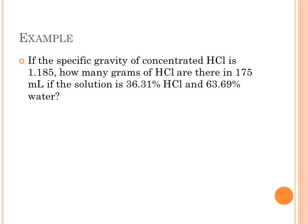So let's say we have the specific gravity of concentrated hydrochloric acid is 1.185, which would yield a density of 1.185 grams per milliliter, approximately. How many grams of HCl are there in 175 milliliters if the solution is 36.31% HCl and 63.69% water? The best way to get at a problem like this is dimensional analysis.